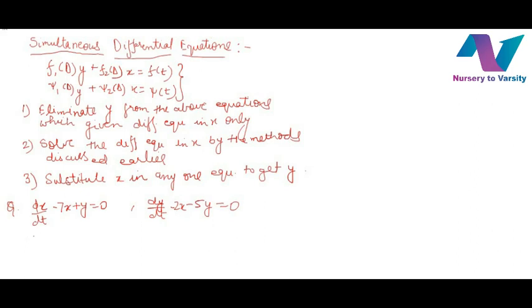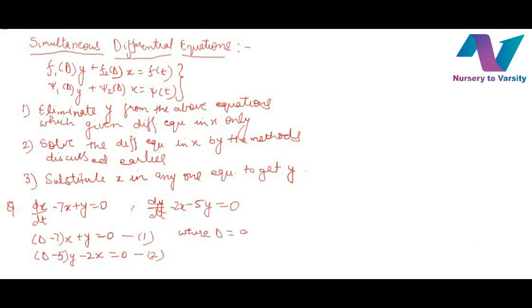The first equation can be written as (D minus 7)x plus y equals 0 — this is equation one. And the second is (D minus 5)y minus 2x equals 0 — this is equation two, where D equals d/dt.